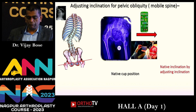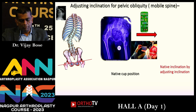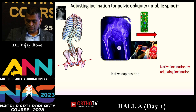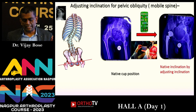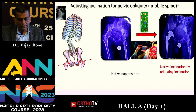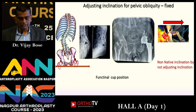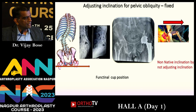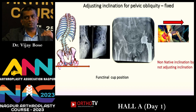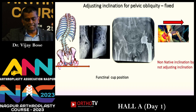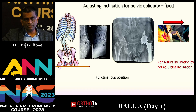This patient has gross pelvic obliquity but a mobile spine — no osteophytes or fusion — so we aim for a native cup inclination. In contrast, the next patient also has pelvic obliquity but a fixed spine. For a fixed spine, you need to keep your socket in the functional position. The landmark is no longer the inter-teardrop line but the horizontal or table line, because the spine will not correct post-operatively. This illustrates the difference between native and functional version.